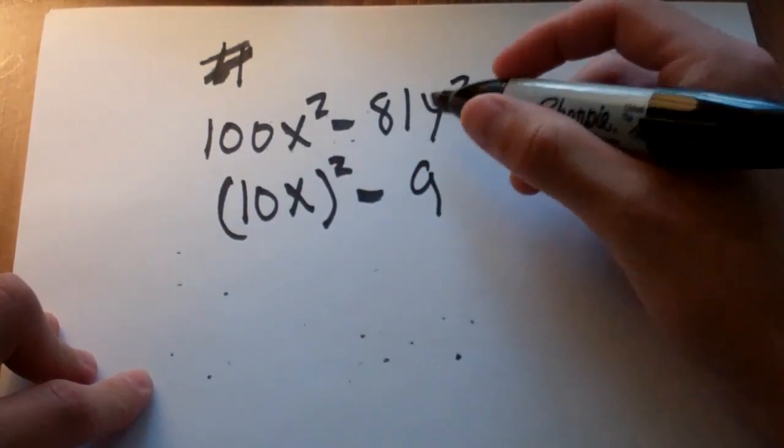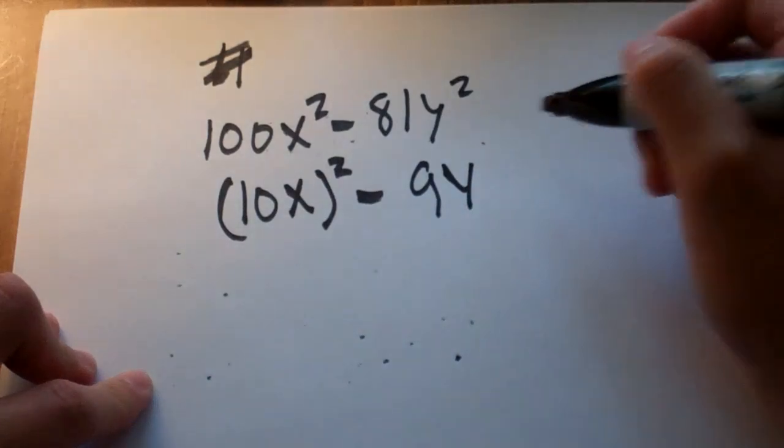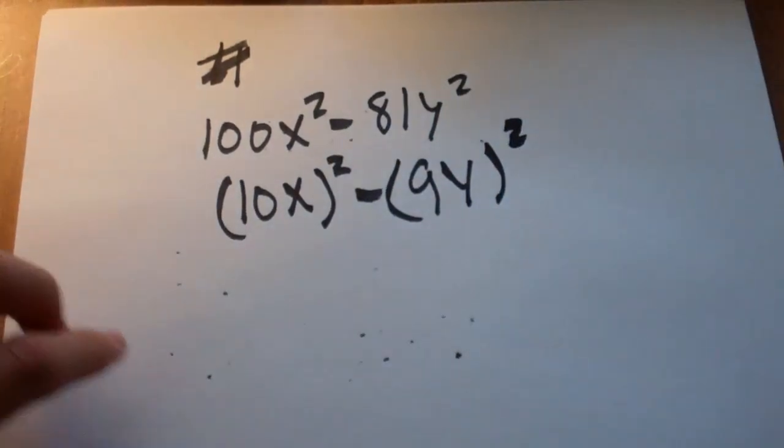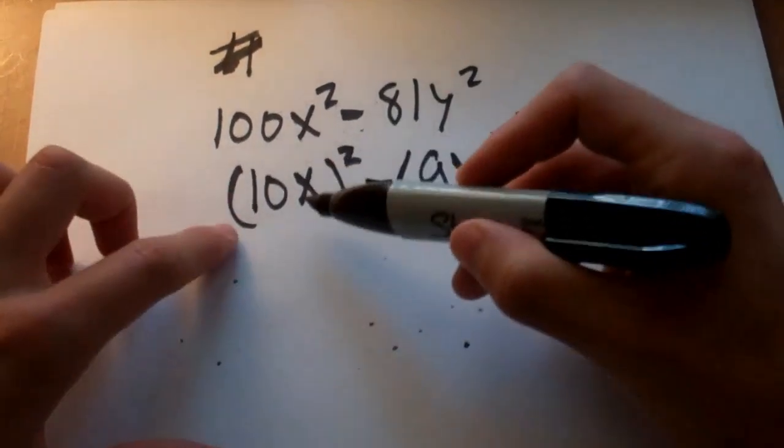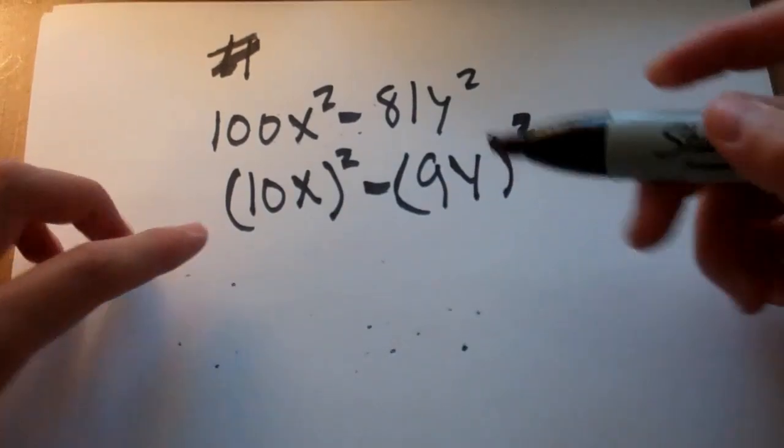And then same thing here. We have a y. And we can say, we can write that squared. So this is maybe a little bit easier to see here if I write it this way.